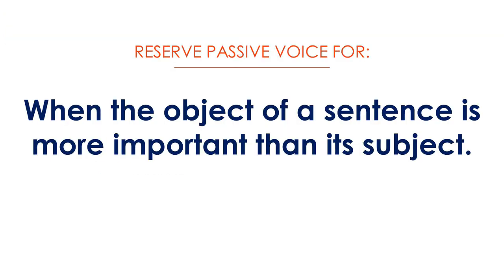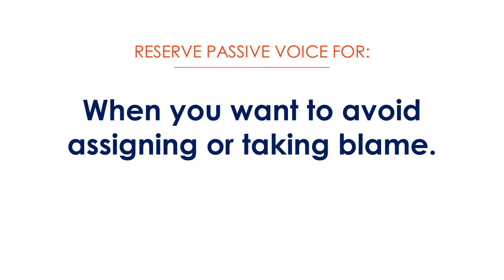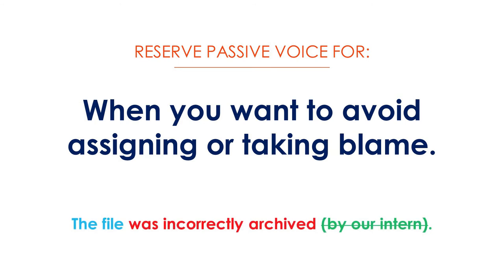Passive voice can occasionally be useful — reserve it for when the object of a sentence is more important than its subject. For instance: 'The cost was calculated to exceed $5 million' — it's probably not important who did the calculation. You can also reserve passive voice for when you want to avoid assigning blame: 'The file was incorrectly archived' omits the person responsible. But in general, prefer active voice.